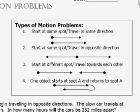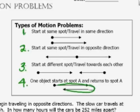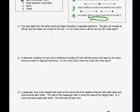There are four different types of motion problems. One is two different vehicles - trains, cars, boats, whatever - start at the same spot and travel in the same direction. Number two, they start at the same spot and travel in opposite directions. Number three, they start at different spots and travel towards each other. And the last one, one object starts at spot A and then returns back to spot A. They could ask how far it was, how long it took, anything like that. Let's take a look at these one at a time.